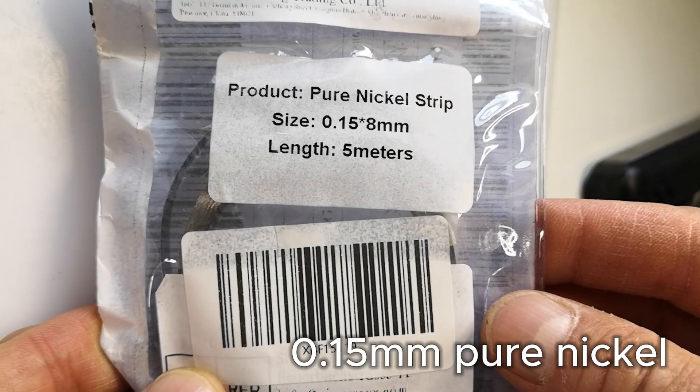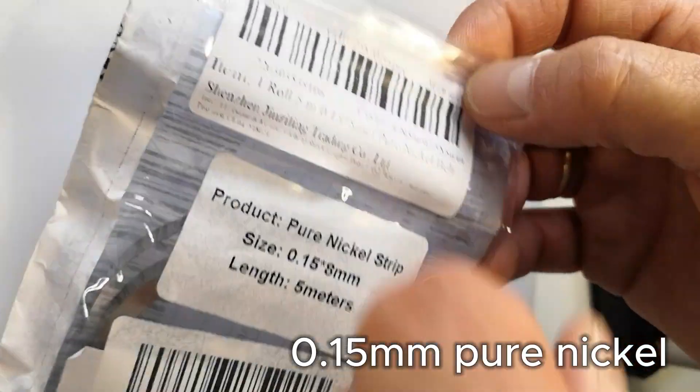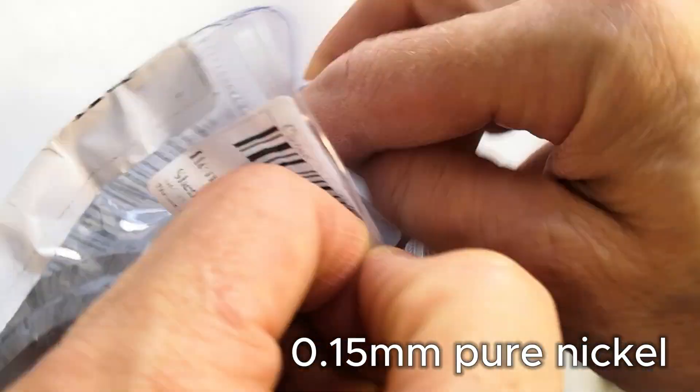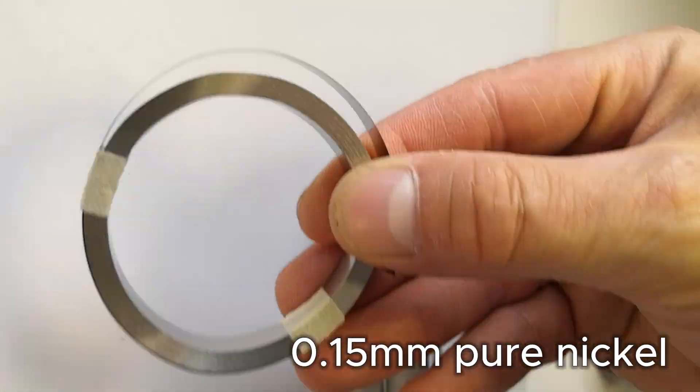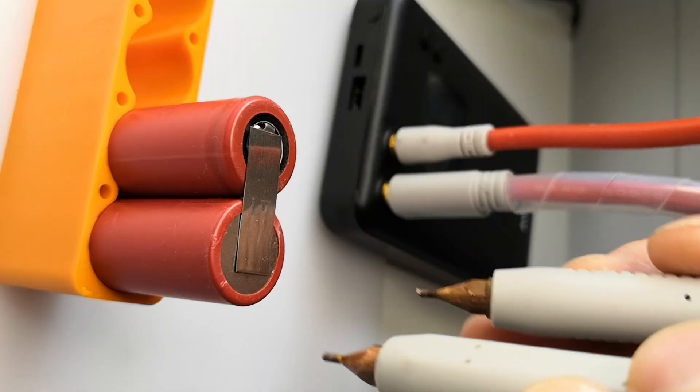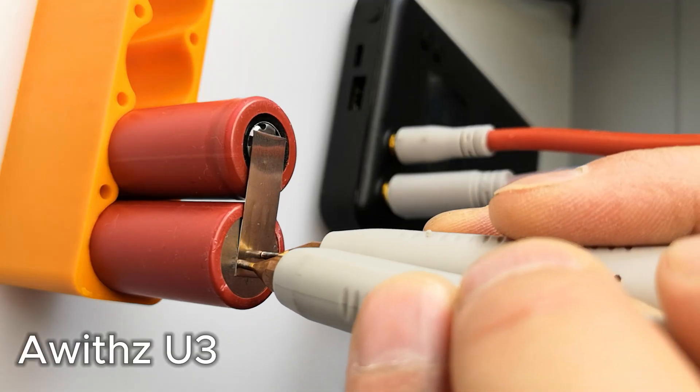Let's use 0.15 mm pure nickel strip which is commonly used in high-powered battery packs and makes a great comparison. Let's start with the Avis.